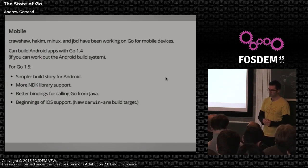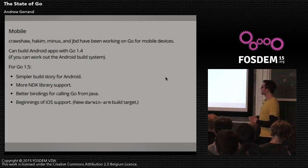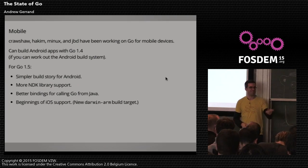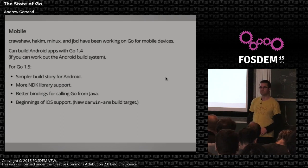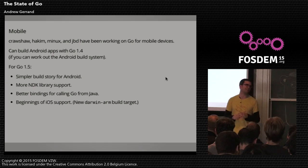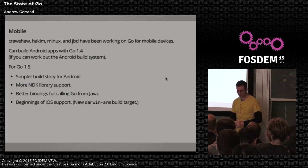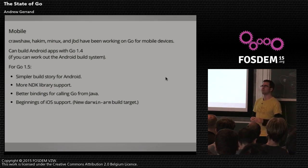Speaking of mobile, people have been working on porting Go to Android and iOS. In 1.4 it was possible to build Android apps if you could work out the Android build system — which is a bit tricky, that's an understatement. In 1.5 there will be tooling to make the build story much more straightforward and more Go-like: you write your code, hit build, and it works. There'll also be better support for accessing more of the NDK, better conventions and bindings for calling Go from Java, and iOS is really exciting — there's been an iOS port going on in the background for several years that we're looking at merging into the core for Go 1.5.